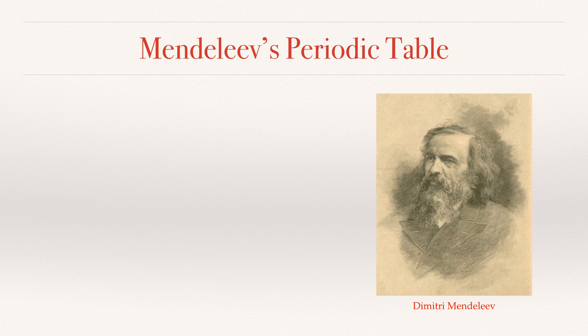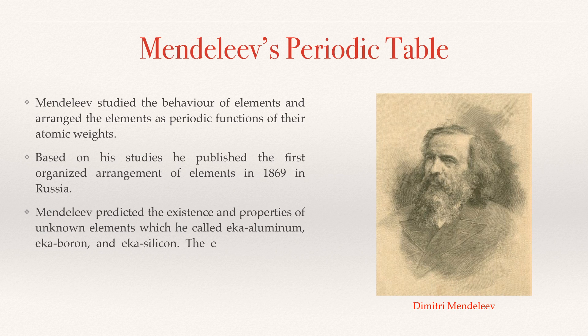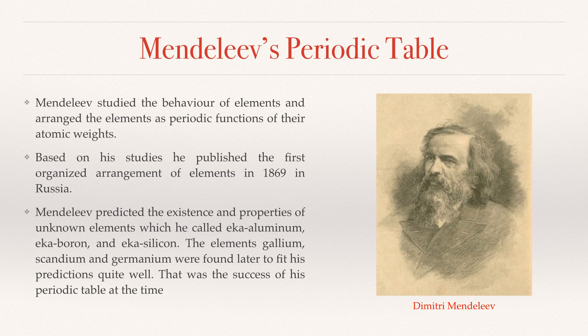Mendeleev's Periodic Table. Mendeleev studied the behavior of elements and arranged the elements as periodic functions of their atomic weights. Based on his studies, he published the first organized arrangement of elements in 1869 in Russia.